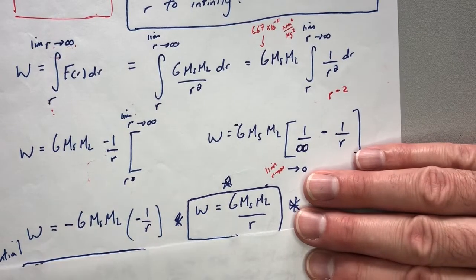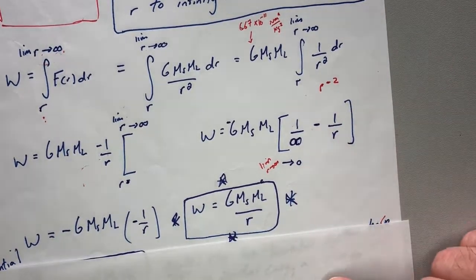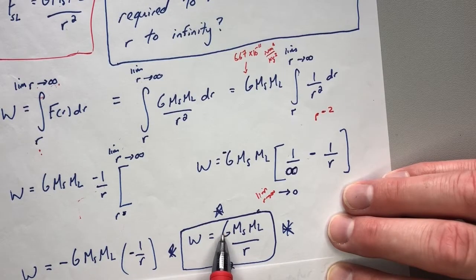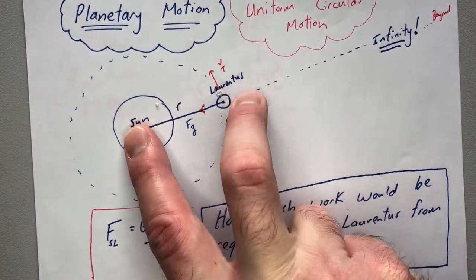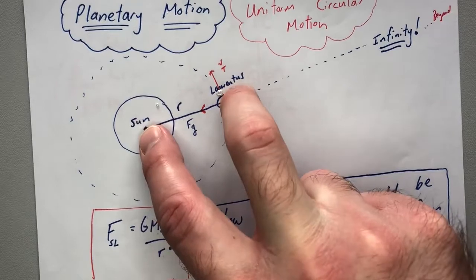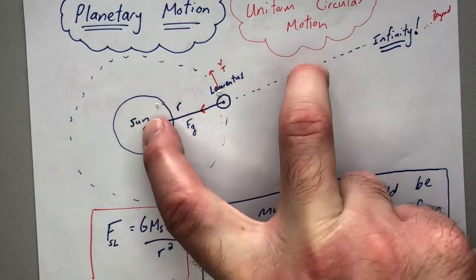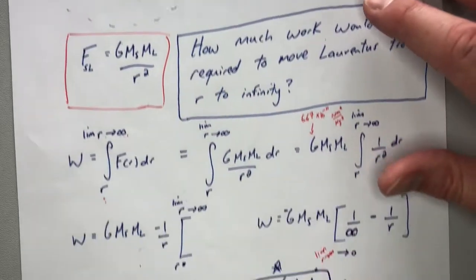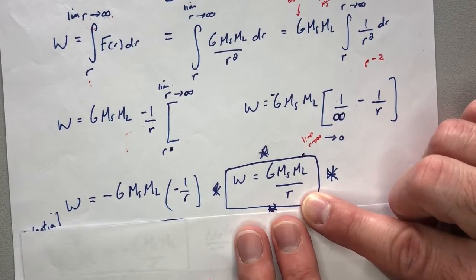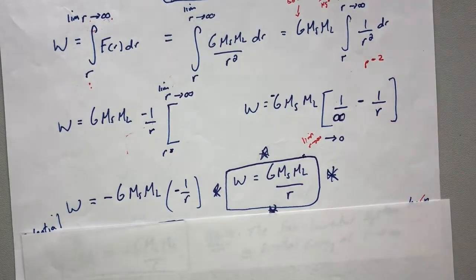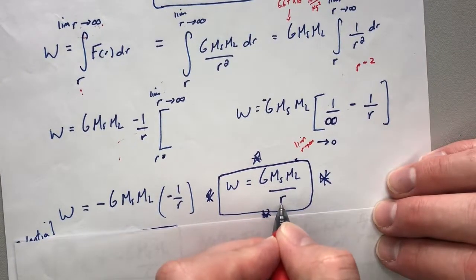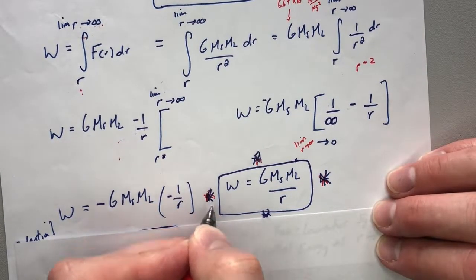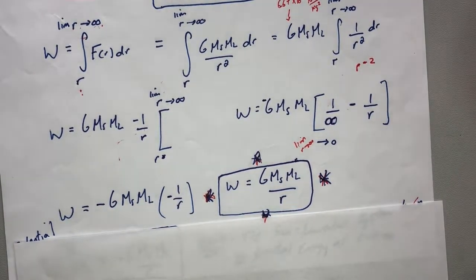That simplifies down nicely. So if you want to figure out how much work it takes to move the planet from a separation r, it's G times mass of sun times mass of Laurentiis over r. That r is whatever the starting separation is between the planet and the sun. If r gets really big — if the two objects were far apart to begin with — it wouldn't take as much work to move it out to infinity, because they're far apart and there's not as much pull.